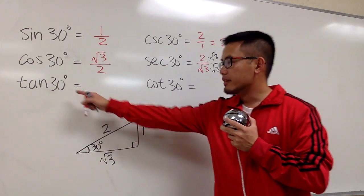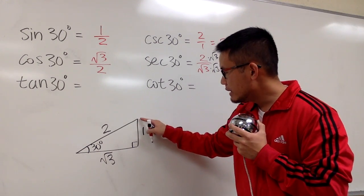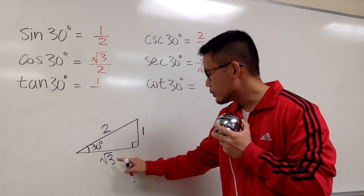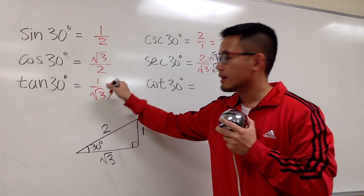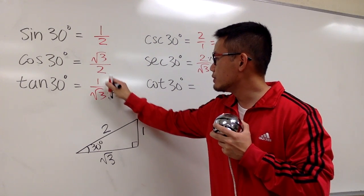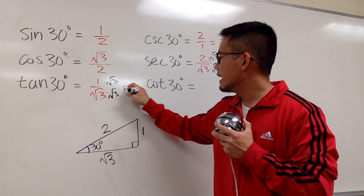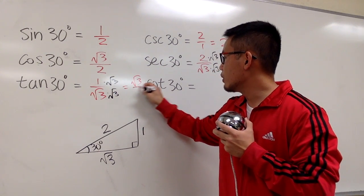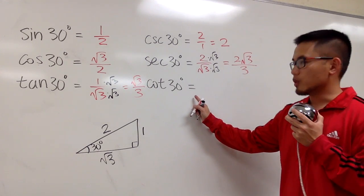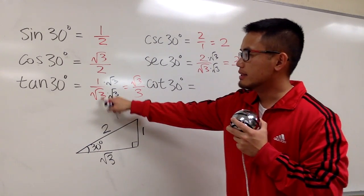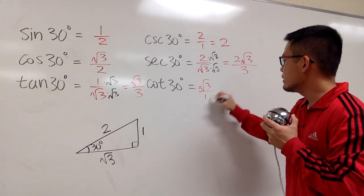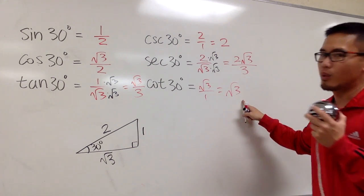Lastly, tangent of 30 degrees is the opposite, which is 1, over the adjacent, which is square root of 3. Now let's go ahead and multiply by square root of 3 on the bottom and the top — at the end, this gives us square root of 3 over 3. And cotangent of 30 degrees is square root of 3 over 1, which is of course just square root of 3.